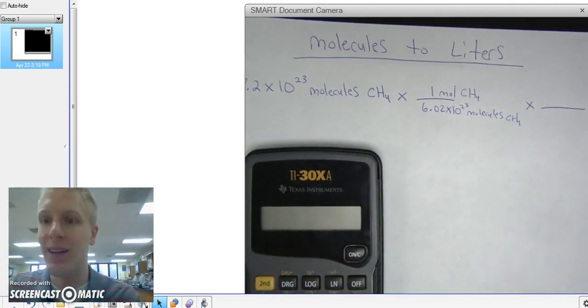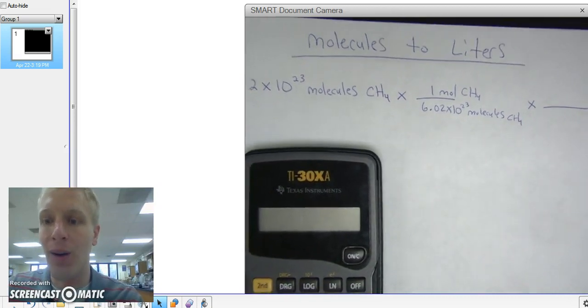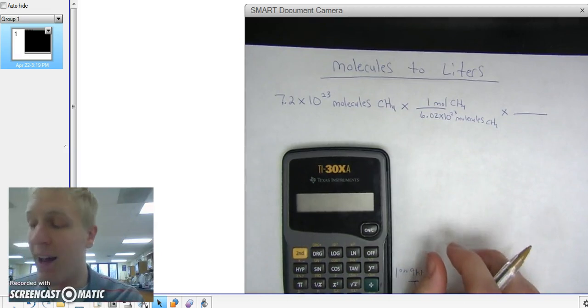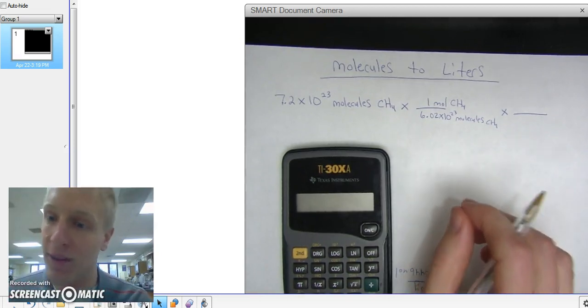Because if you take IB or AP chemistry, you're going to run into some problems that have 3, 4, sometimes even 5 conversion factors.